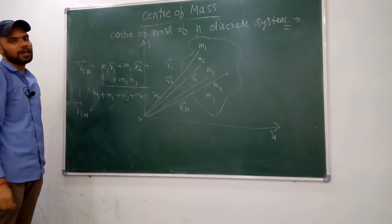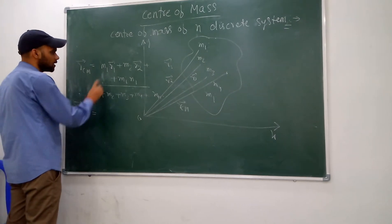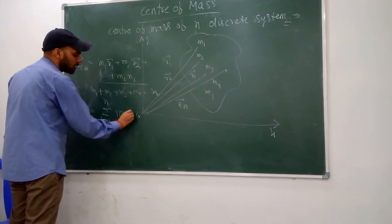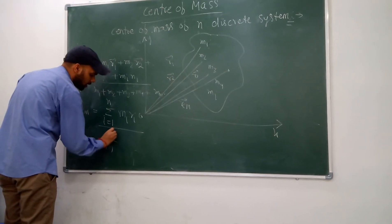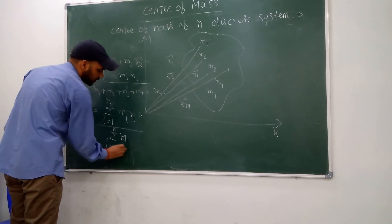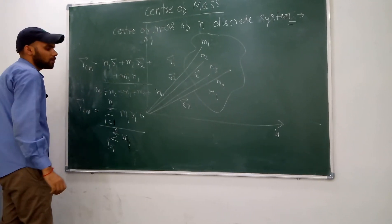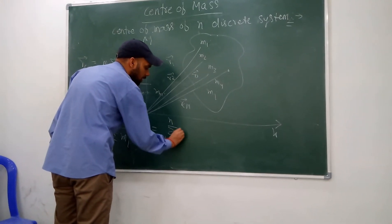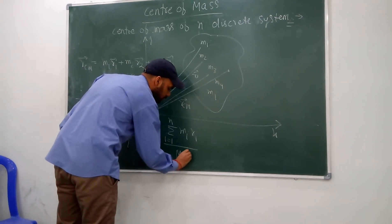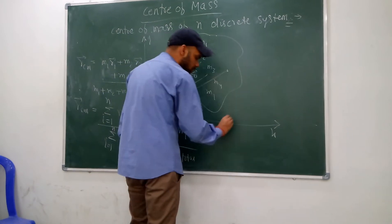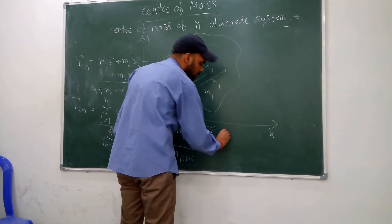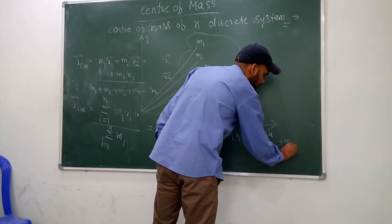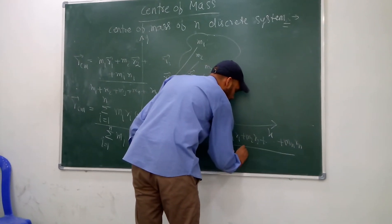How can you write this formula in summation form? In summation form, with particles from i equals 1 up to N: RCM equals the summation of Mi·Ri divided by the summation of Mi. This summation of Mi equals the total mass of the system M. So RCM equals the summation from i equals 1 to N of Mi·Ri, divided by M, the total mass of the system.